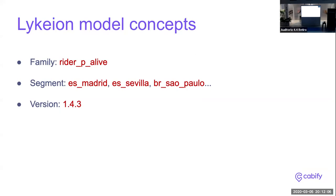A model has three main attributes. The first is the family, which is basically the name of the model. The second is the segment, which is optional — in data science it's common to have a different model per country, per language, or in our case per region where we operate. The third is the version, following semantic versioning. Importantly, a version changes when either the data used to train it changes or the code changes, so we can have traceability.